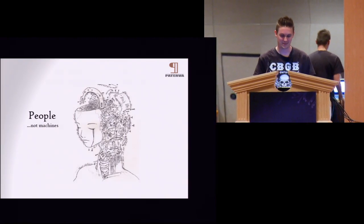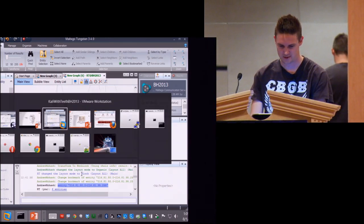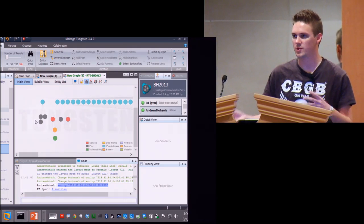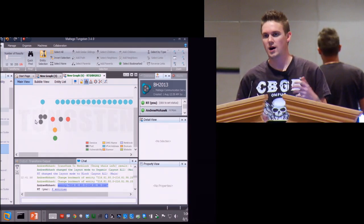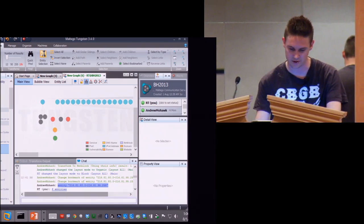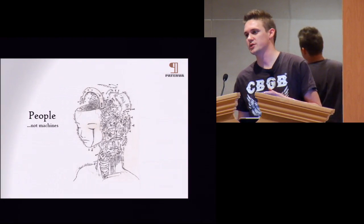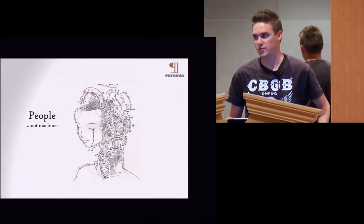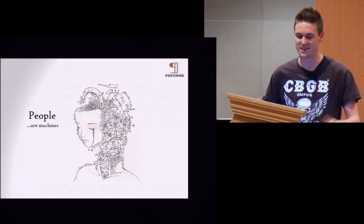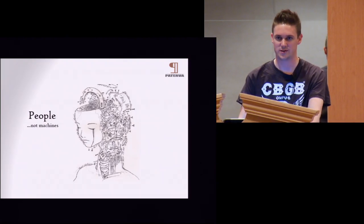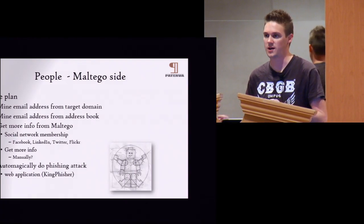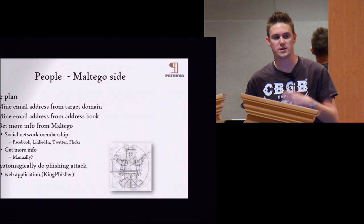If you look at any of the big breaches, or if you speak to any pen testers, you'll hear them say: if they're stuck in a pen test, they just send email to everyone. People click on things and open attachments — they get excited because an Excel document can run macros. That generally voids the privacy agreement. What we want to do is automate this stuff, because Maltego already does quite a lot of data mining on individuals. We're going to automate this to help with the phishing attack.